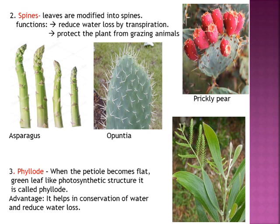When leaves are present they have stomata, and water is naturally lost through transpiration. But if these leaves get transformed into spines, the plant will not lose any water — so the function is to reduce water loss by transpiration. An additional function is to protect the plant from grazing animals. Examples include Asparagus, Opuntia, and prickly pear.